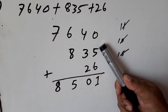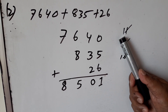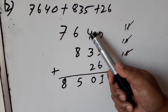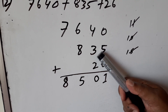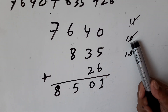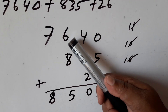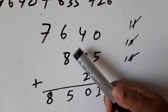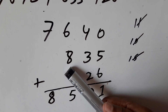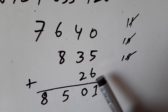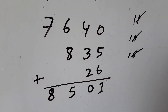Now the next problem. 5 plus 6 equals 11 — write 1 here and carry 1. 4 plus 1 is 5, 5 plus 3 is 8, 8 plus 2 is 10 — write 0 here and carry 1. 1 plus 6 equals 7, 7 plus 8 equals 15 — write 15 here and carry 1. 7 plus 1 equals 8.